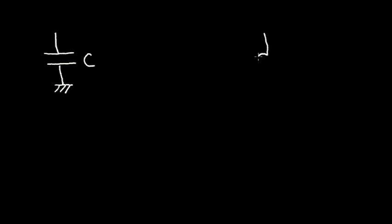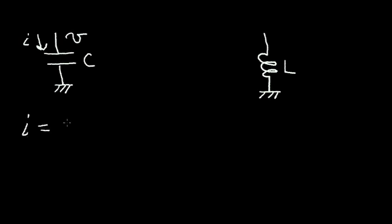I want to introduce the current and voltage equations for a capacitor and for an inductor. Let's presume that I have a capacitor with a bottom terminal tied to ground. It has the value of capacitance called C. And over here I have an inductor. This terminal also tied to ground, and it has a value of inductance L. If I want to write the equation for current in this capacitor, I, versus the voltage across the capacitor, V, I come up with an equation. Current is equal to the capacitance C times dV/dT.